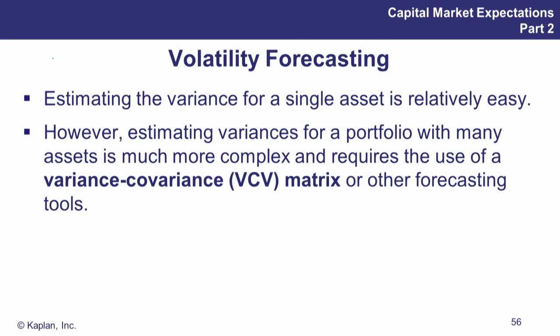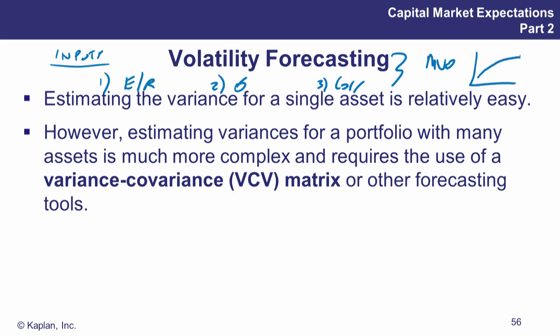Now, if we go back a step to the inputs. Capital market expectations - three inputs. We've had quite a good look at expected returns: equities, bonds, fixed income, and real estate. Also looking at volatility now, and the idea of a correlation matrix or covariance matrix in terms of correlations too. Remember, these inputs are all part of our MVO idea, our process, our methodology. They'll get input to get our efficient frontier out the other side.